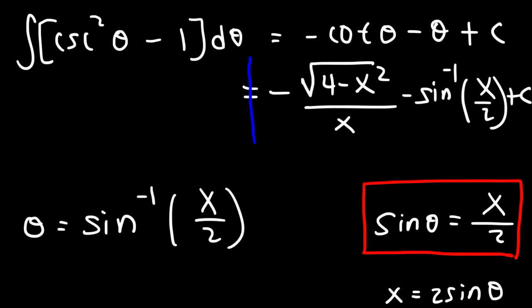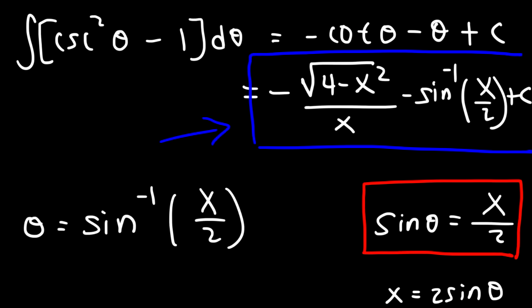So the final answer is negative square root of (4 minus x squared) over x minus arc sine of x over 2, plus the constant of integration. That's an example of using trigonometric substitution to find an antiderivative. Because it's a long problem, I'm only doing one example in this video. If you want more examples, check out my new calculus video playlist in the description, or subscribe to this channel. Thanks again for watching.